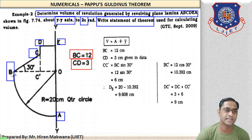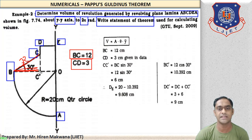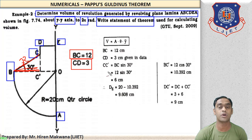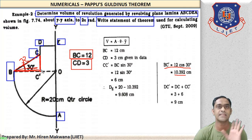BC is this inclined line of 12 cm. This angle is given as 30 degrees. This inclined hypotenuse BC is 12 cm. So the horizontal distance BC' will be 12 cos 30, and BC' = 12 cos 30 = 10.392 cm.